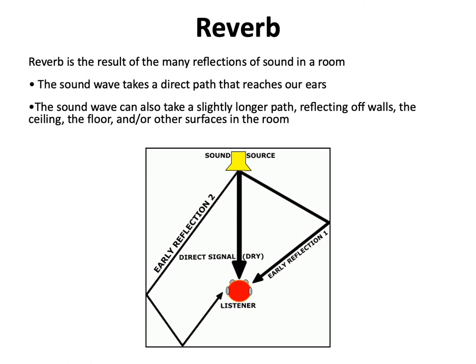Reverb is the result of many reflections of sound in a room. The sound wave takes a direct path that reaches our ears. It can also take a slightly longer path by reflecting off of the walls, ceiling, the floor, and other surfaces in the room. The sound emanating directly from the sound source and reaching the listener's ears without reflection is known as direct sound.